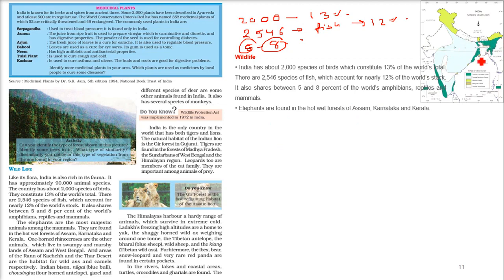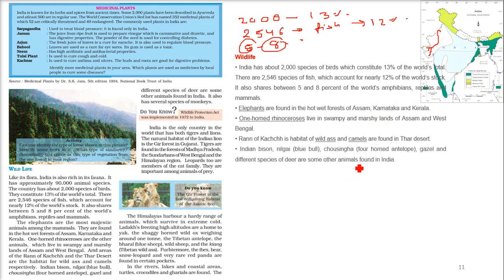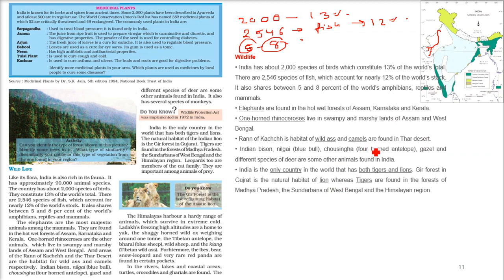Elephants are found in the hot wet forests of Assam, Karnataka, and Kerala. One-horned rhinoceros live in swampy and marshy land of Assam and West Bengal. Wild ass and camels are found in the Rann of Kutch and Thar Desert. Indian bison, nilgai (blue bull), chausinga (four-horned antelope), and gazel, along with different species of deer, are found in various parts of India.